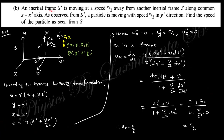The next question: an inertial frame S prime is moving at speed c/2 with respect to another inertial frame S along the x-x prime axis. An observer in S prime sees a particle moving with speed c/2 in the y prime direction. The coordinates with respect to S are (x, y, z, t) and with respect to S prime are (x', y', z', t'), with corresponding velocity components u_x', u_y', u_z'.